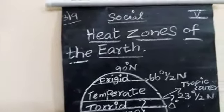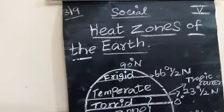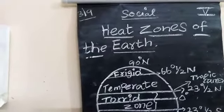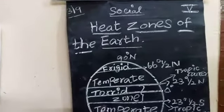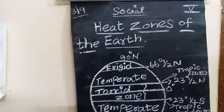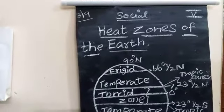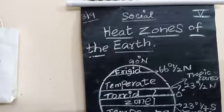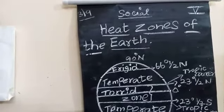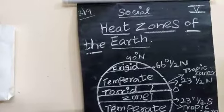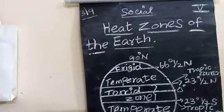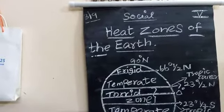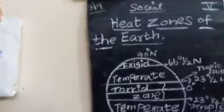Good morning students. Today in class I am going to explain about heat zones of the earth. We are all living in different parts of the world and we are all receiving different temperatures. Temperature is not the same every day — it varies from one day to another, and differs from one place to another. This picture explains about heat zones of the earth, and our land is divided into various heat zones.